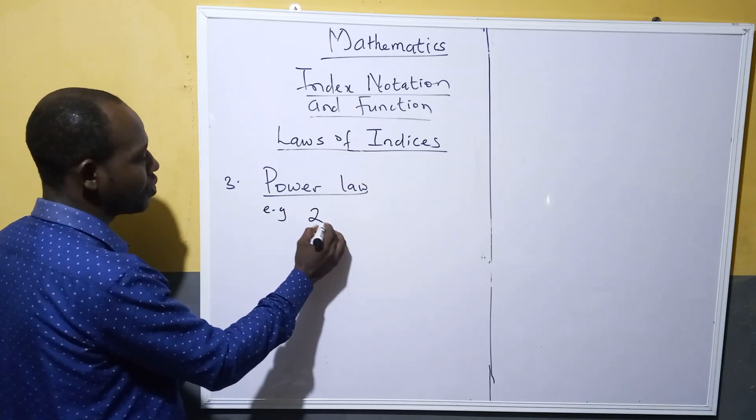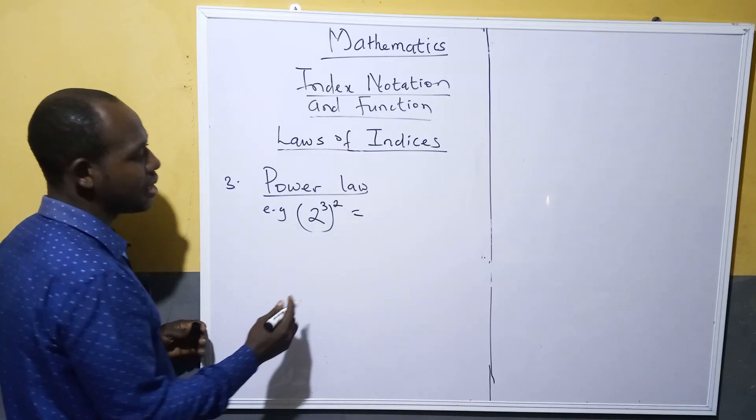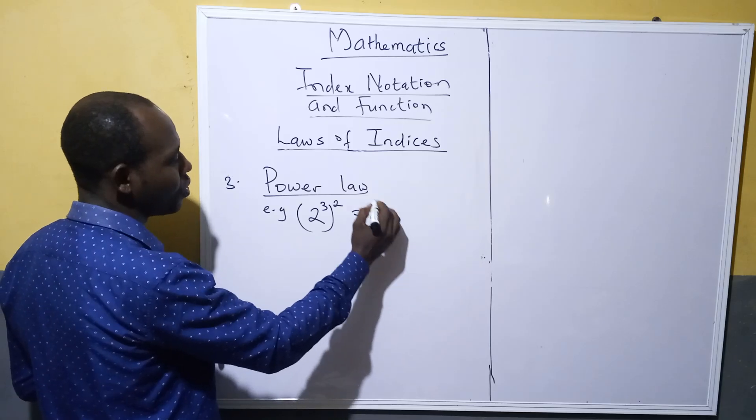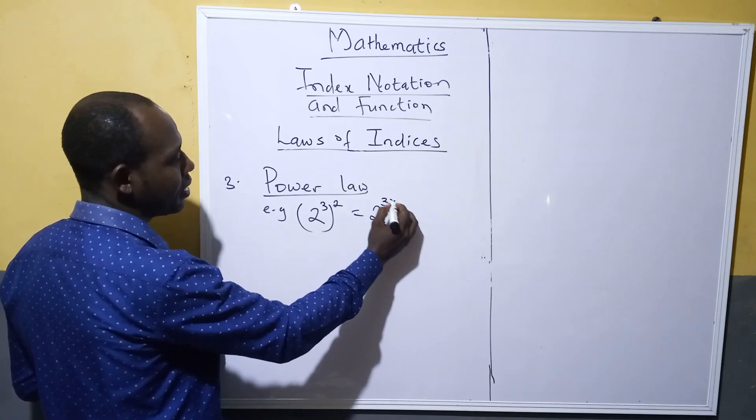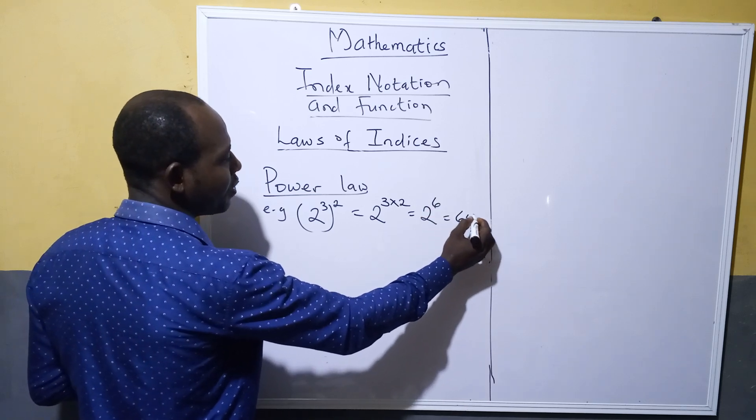Look at it, for example: if you have 2 raised to power 3 then raised to power 2, the law simply states that you multiply these two powers, which becomes 2 raised to power 3 times 2, and you have 2 raised to power 6, which gives you 64.